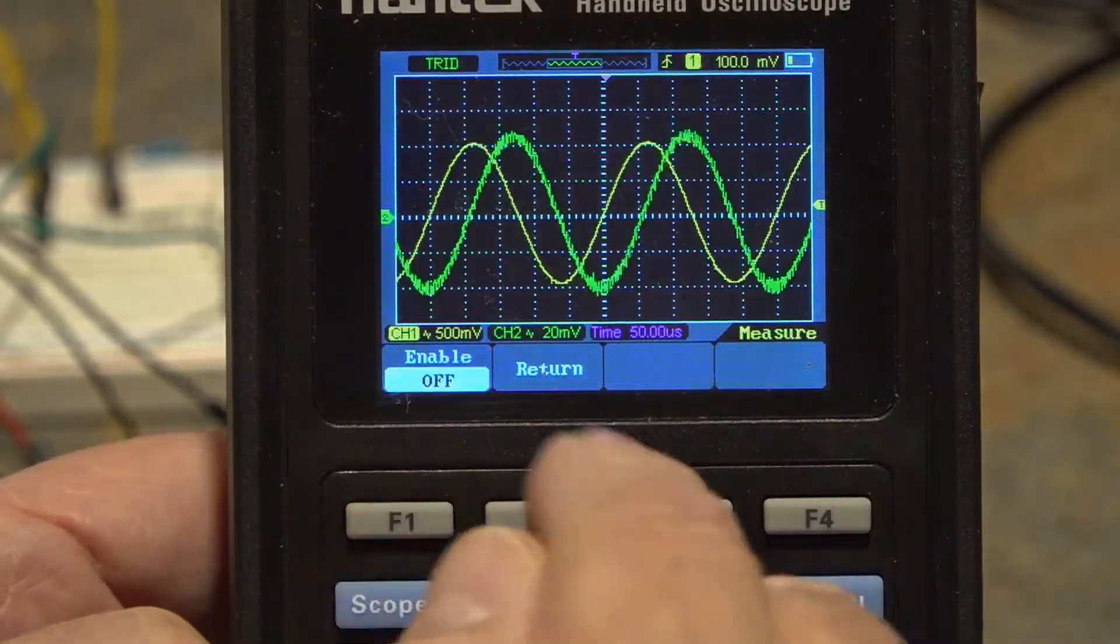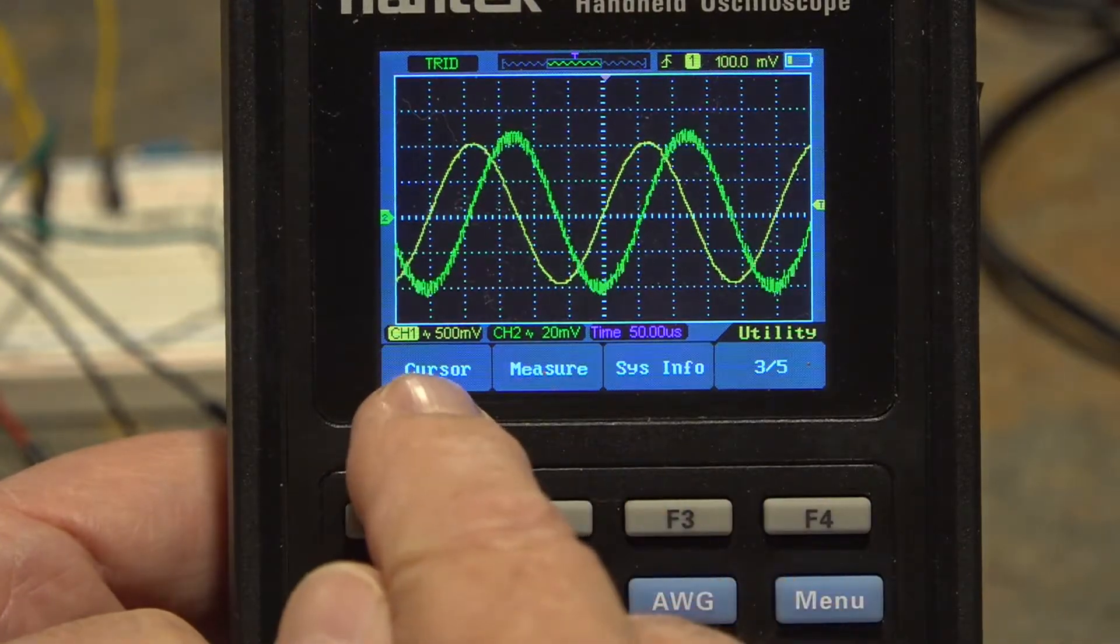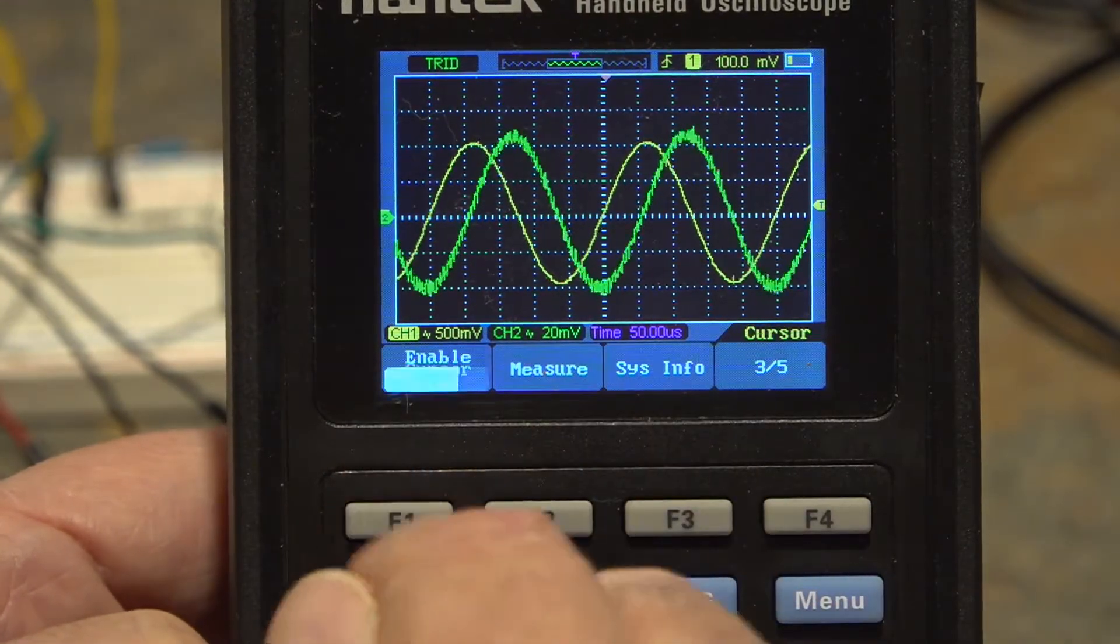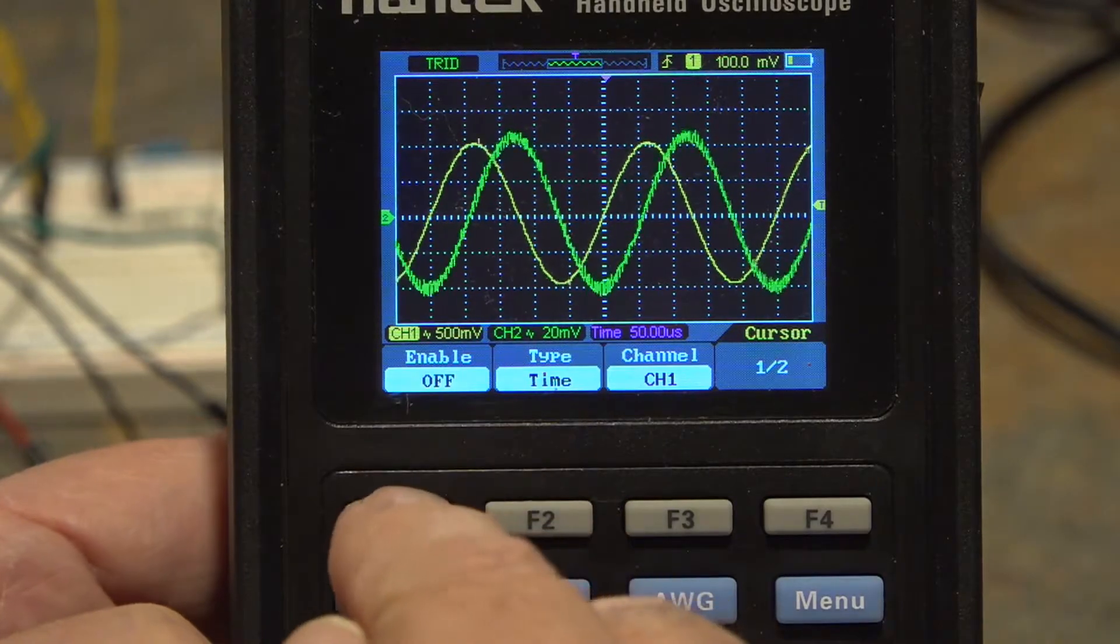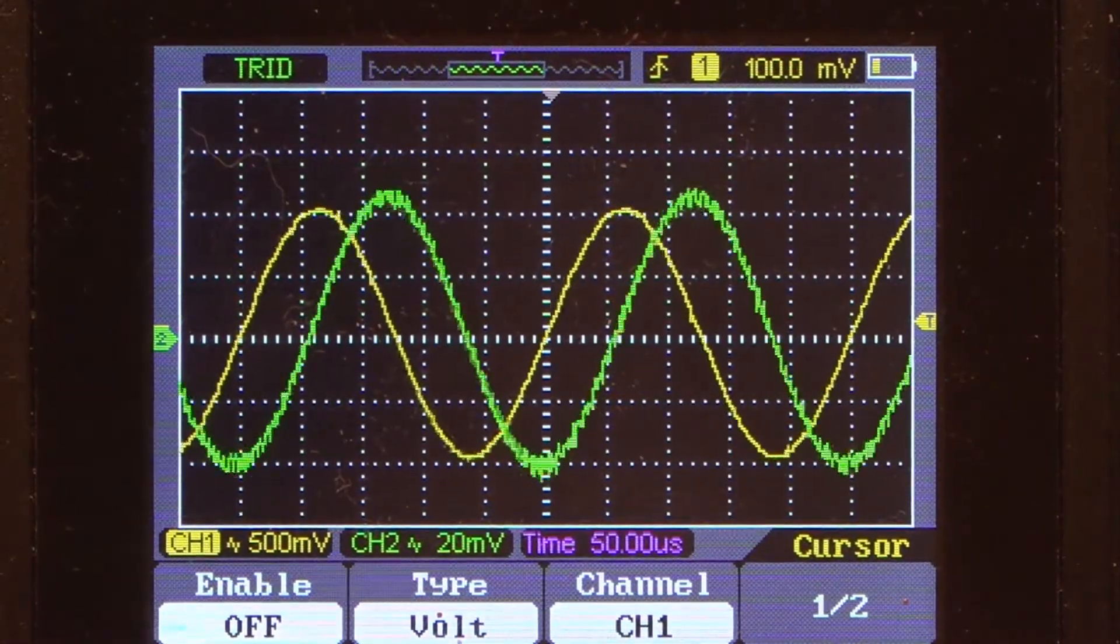Now the other feature we have if we go back, hit return F2, we now have cursors. There we go. And there's two types of cursors that we can use. So we'll enable it and the first one is volts.